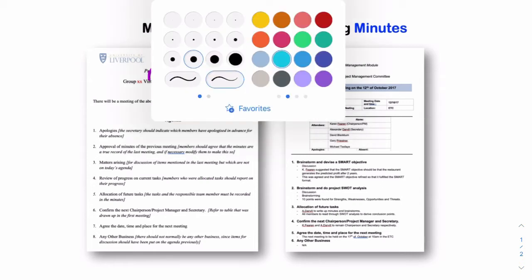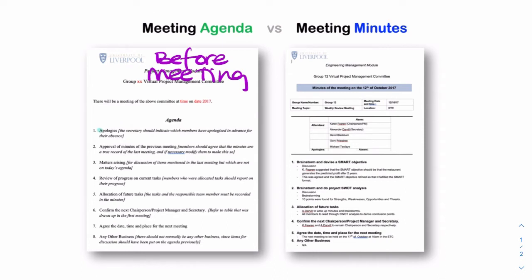The agenda will consist of items — standing items like apologies, approval of minutes from the previous meeting, matters arising, review of progress, allocation of future tasks, confirmation of next chairman, date of next meeting, and any other business. These are standing items. Almost every meeting in the world will have these items. You might add some items or change a couple, but generally the agenda will have apologies and approval of previous minutes.